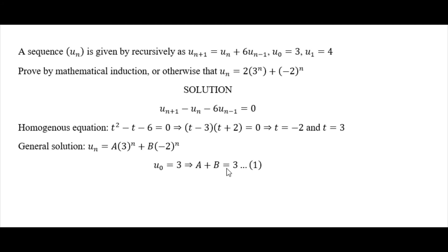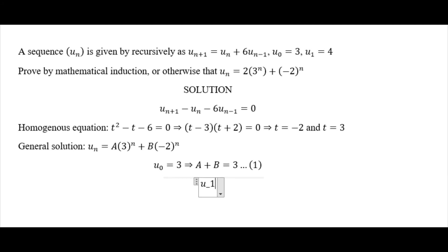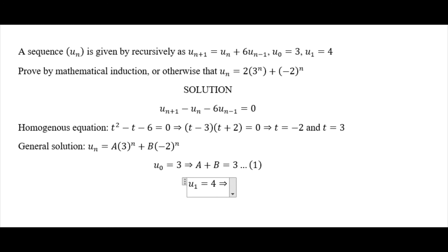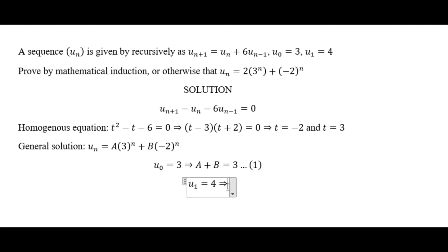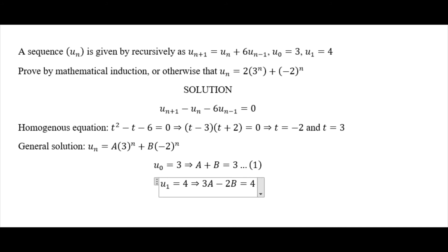The second initial condition is u(1) = 4. Substituting n = 1 into the general solution gives 3A + (-2)B = 4, that is 3A - 2B = 4. We call this equation two.